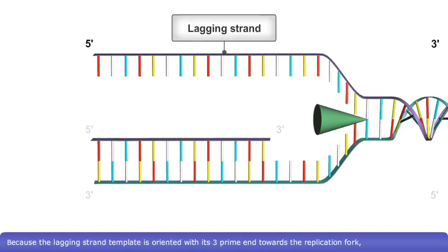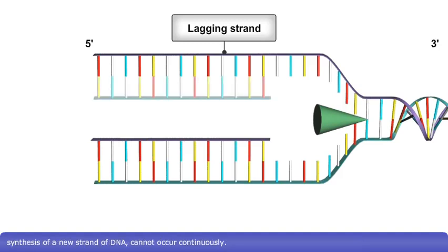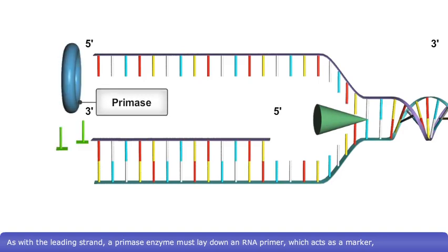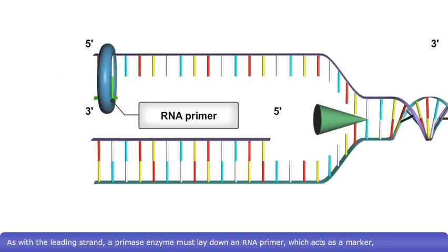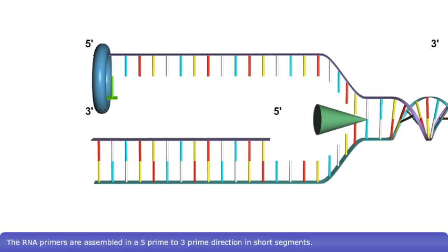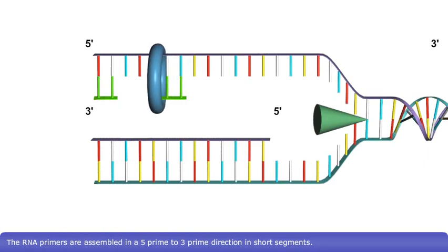Because the lagging strand template is oriented with its 3' end towards the replication fork, synthesis of a new strand of DNA cannot occur continuously. This is because DNA polymerase can only add nucleotides to the 3' end of a DNA molecule. As with the leading strand, a primase enzyme must first lay down an RNA primer, which acts as a marker signaling where DNA polymerase should be recruited. The RNA primers are assembled in a 5' to 3' direction in short segments.